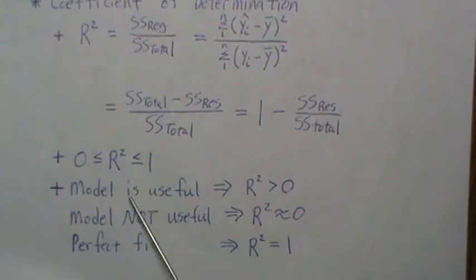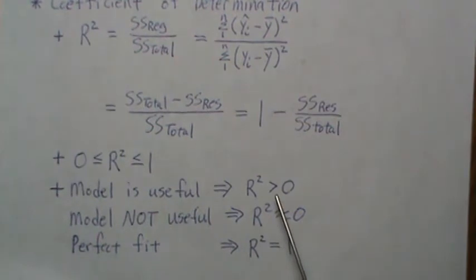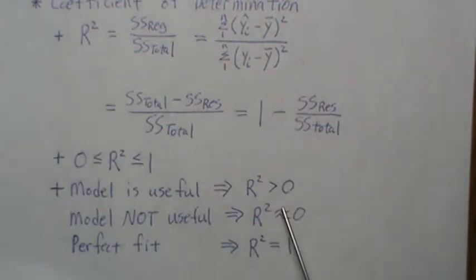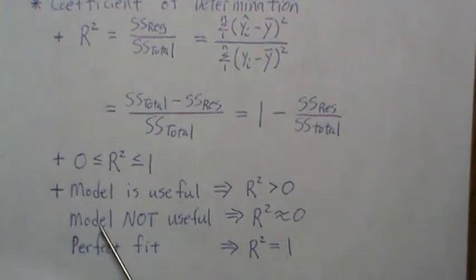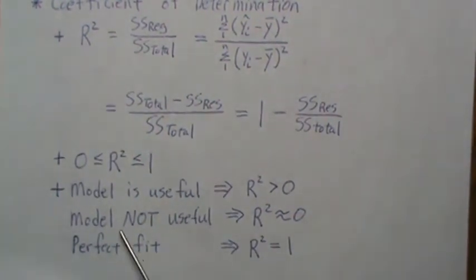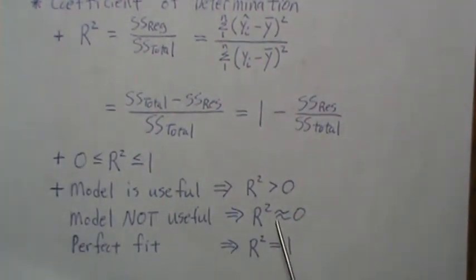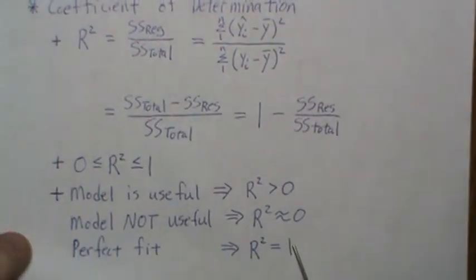As a quick reminder, R² is between zero and one. The model is useful if the coefficient of determination is significantly greater than zero — we'll touch on what 'significantly' means in later videos. If R² is close to zero the model is not useful, and a perfect fit means R² equals one.